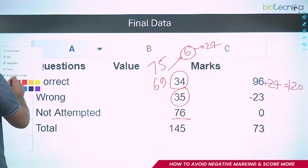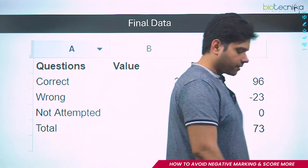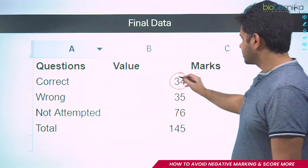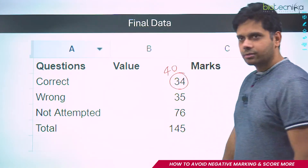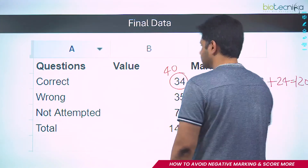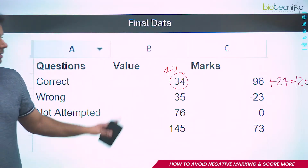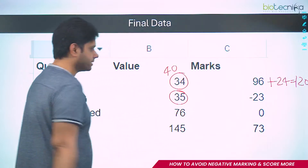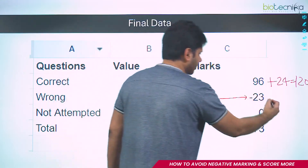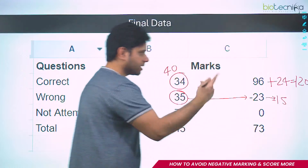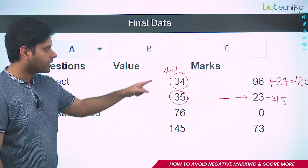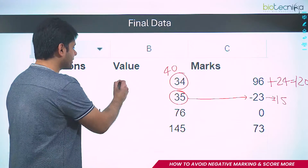Let's change the numbers to show where you can win. If she had solved 40 correct questions, maximizing Part C, 96 plus 24 equals 120 — she would have qualified. If she had minimized negatives to around minus 15, meaning only 8 marks lost, she would have been in the top. The choices we make in the exam are decided by our concepts.